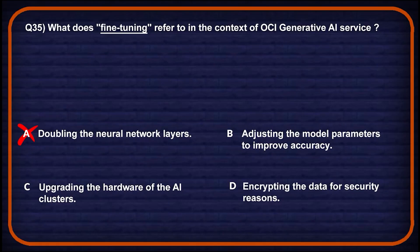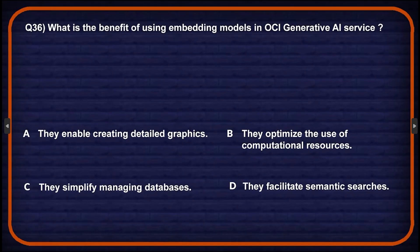Option C: upgrading the hardware of an AI cluster — hardware upgrades affect performance but aren't part of fine-tuning, so wrong choice. Option D: encrypting the data for security reasons — encryption is a security measure unrelated to model training, so again the wrong choice. Option B will be the correct one.